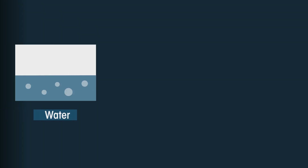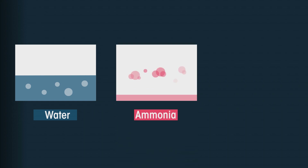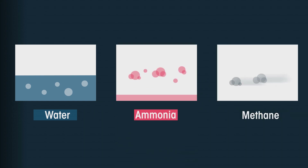Water is liquid at room temperature and pressure, whilst ammonia is a gas that is easily liquefied, and methane is a gas. Intermolecular forces are normally very weak in covalent compounds, but in water they are just strong enough to keep it as a liquid. A bit more energy is needed to overcome these forces and boil it. If water were not a liquid, life as we know it would be completely different.